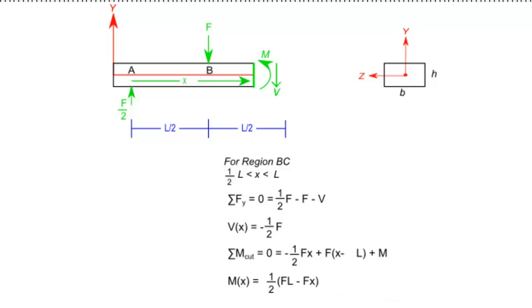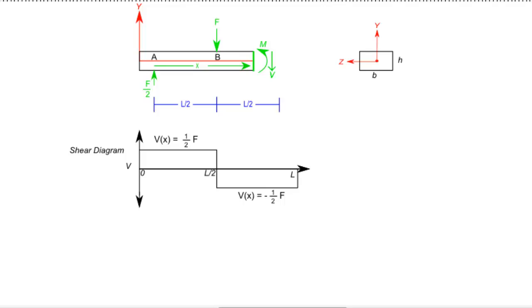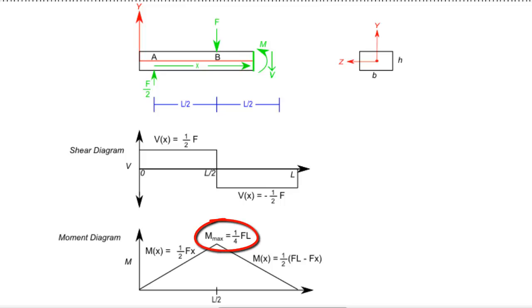Now, an easy way to summarize these results is to present them in the form of shear and moment diagrams. Once in this form, it is easy to identify where the maximum moment occurs, and as a result, where the maximum bending stress will occur.